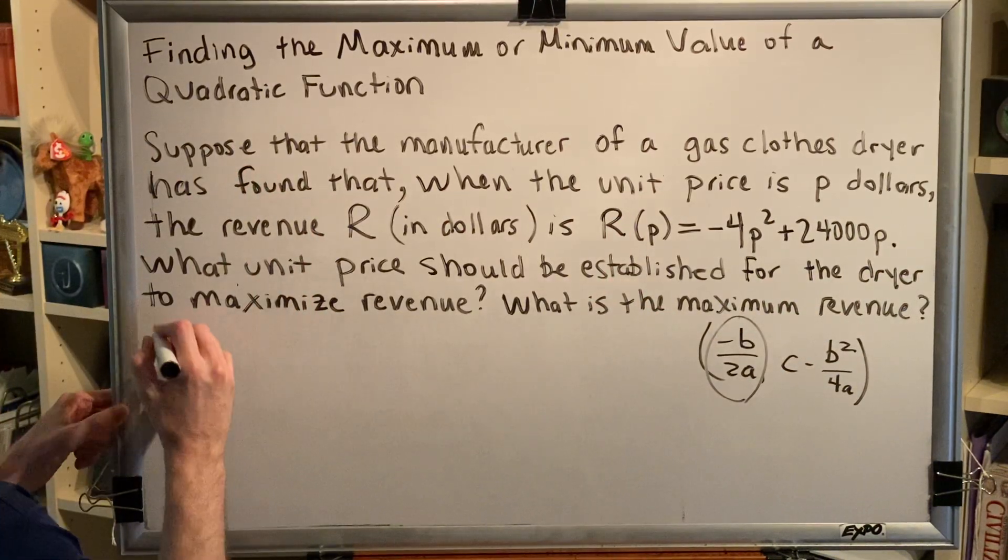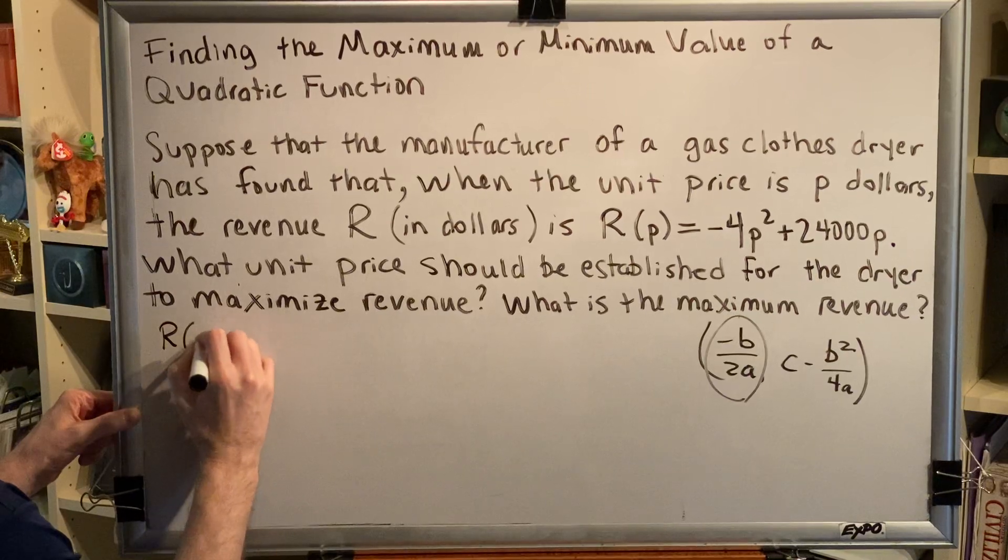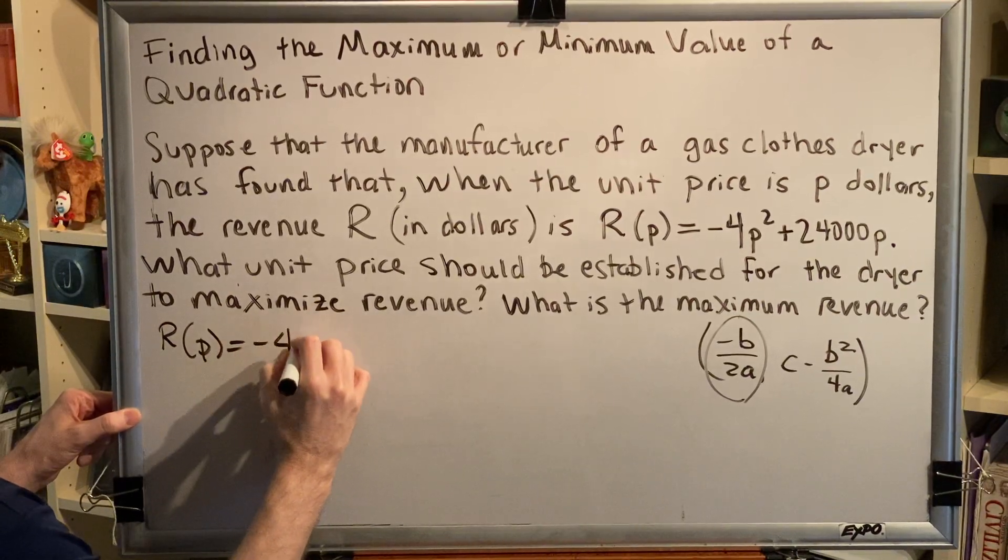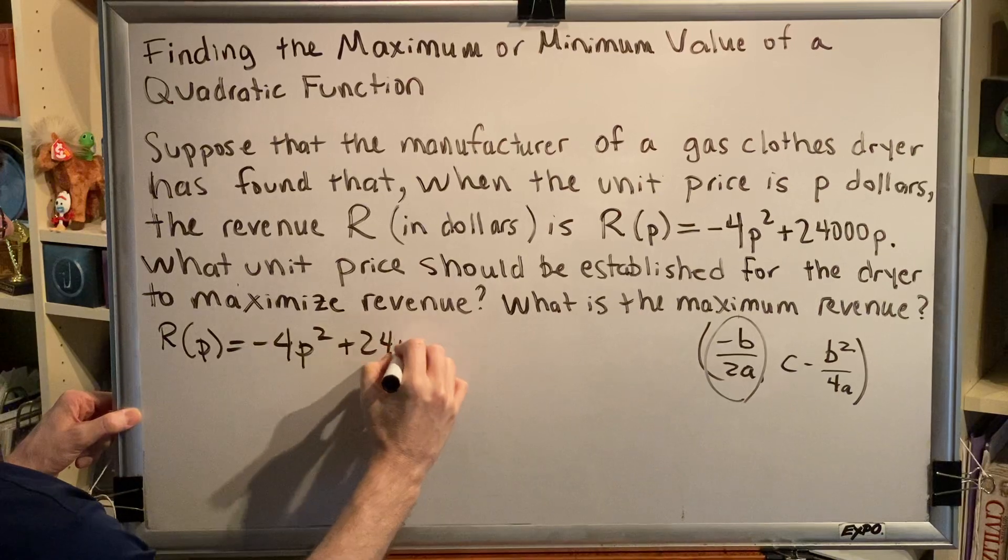Okay, so let's go ahead and proceed. We have the following function r of p equals negative 4p squared plus 24,000p.